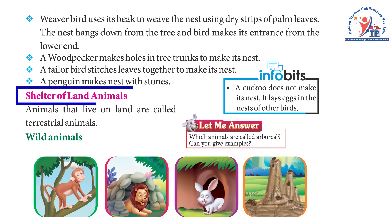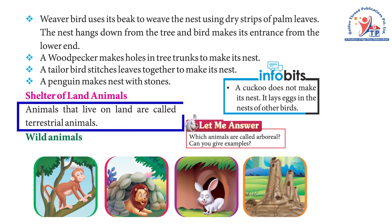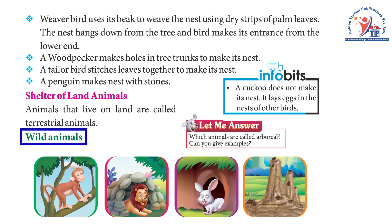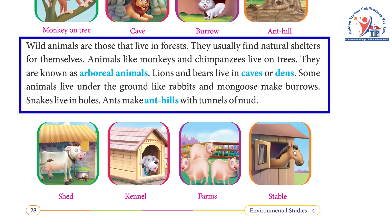Shelter of land animals. Animals that live on land are called terrestrial animals. Wild animals are those that live in forests — they usually find natural shelters for themselves. Monkeys and chimpanzees live on trees and are known as arboreal animals. Lions and bears live in caves or dens. Some animals live underground, like rabbits and mongoose. Snakes live in holes and burrows. Ants make anthills with tunnels of mud.